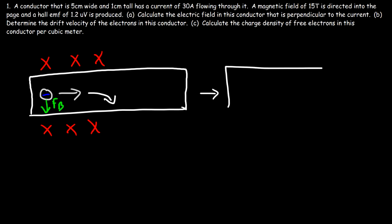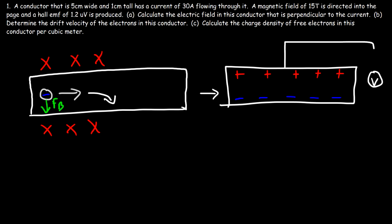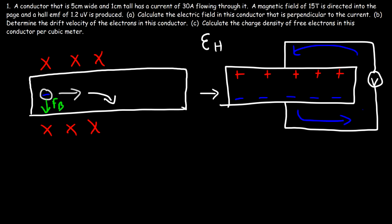Over time there will be a buildup of negative charge at the bottom, and because the top part is electron-deficient it will have a positive charge. There will be a voltage across the conductor — that voltage is known as the Hall EMF. Electrons will flow from one side back to the other, creating a small voltage across the conductor.